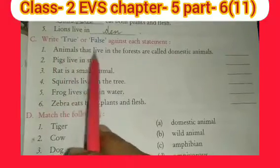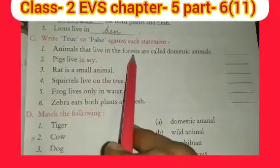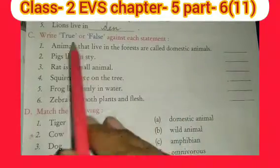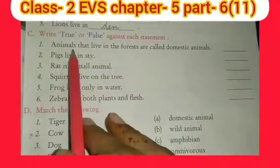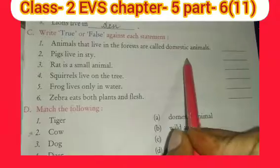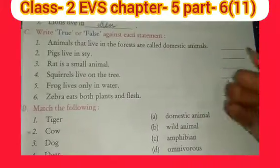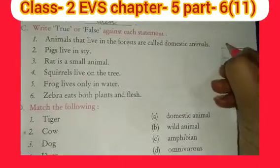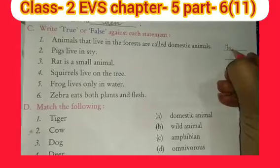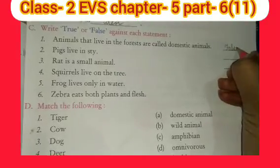First sentence: animals that live in the forest are called domestic animals. This animal which lives in the jungle — is that false? This is false.